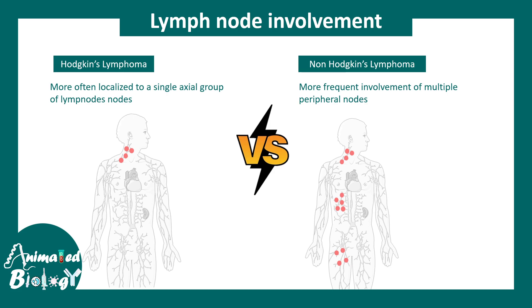The lymph node involvement is quite different. More often, Hodgkin's lymphoma is localized to a single axial group of lymph nodes. Non-Hodgkin's lymphoma basically involves multiple lymph nodes, including multiple peripheral lymph nodes as well.